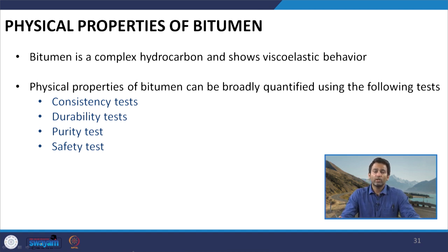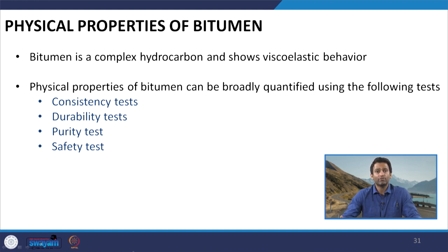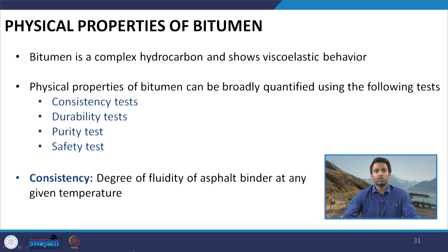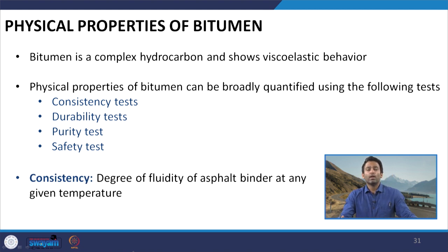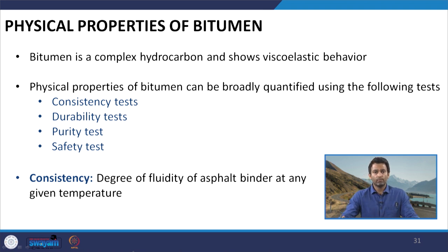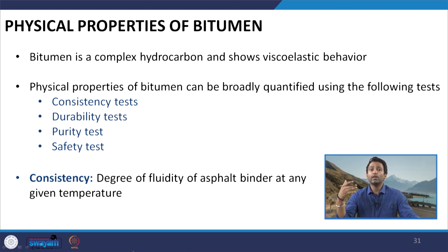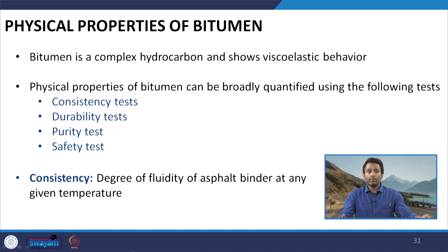Let us start with understanding the consistency properties of bitumen and how we define consistency. Consistency is generally defined as the degree of fluidity of the asphalt binder at any given temperature. It tells us the indirect stiffness of the binder at a particular temperature.